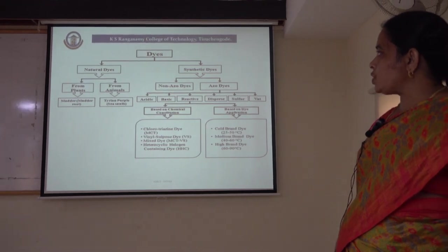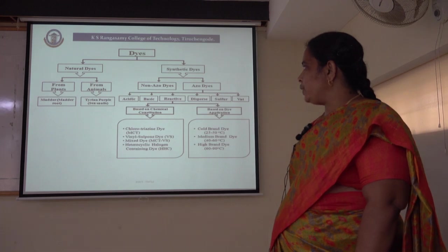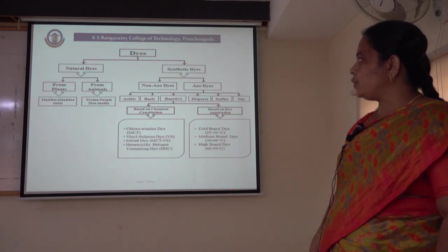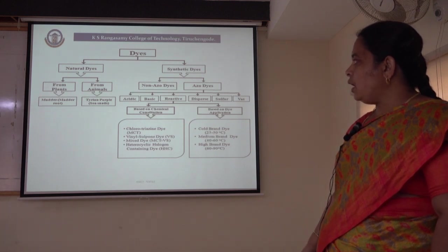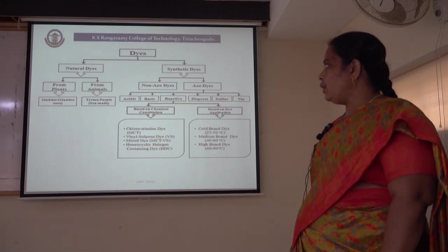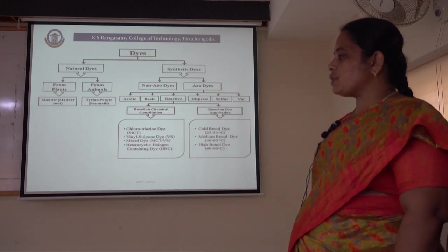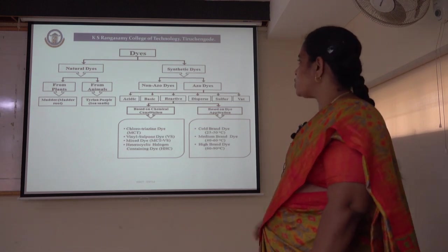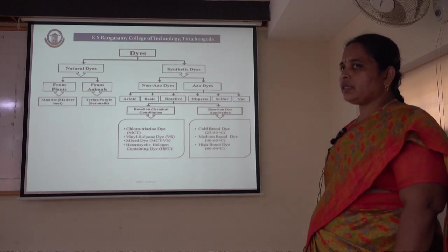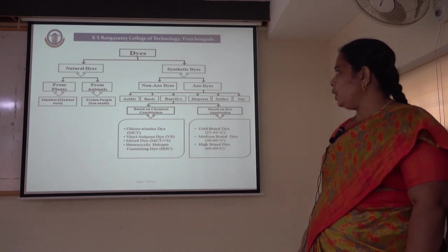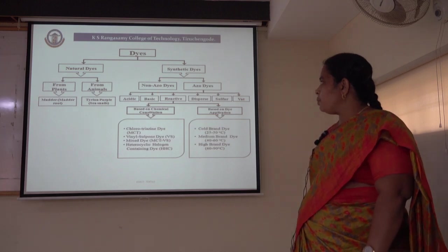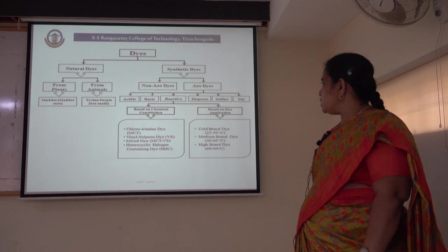Coming to the exact flowchart for the classification of dyes — dyes based on origin are first classified into natural dyes and synthetic dyes. Natural dyes are further classified into dyes extracted from plants and dyes obtained from animals. One example for dyes from plants is madder, obtained from the madder root; and from animals, the main example is Tyrian purple, obtained from a sea snail. Synthetic dyes can be further classified into non-azo dyes and azo dyes. Most synthetic dyes are azo dyes. Azo dyes can further be classified into acid dyes, basic dyes, reactive dyes, dispersed dyes, sulphur dyes and vat dyes.